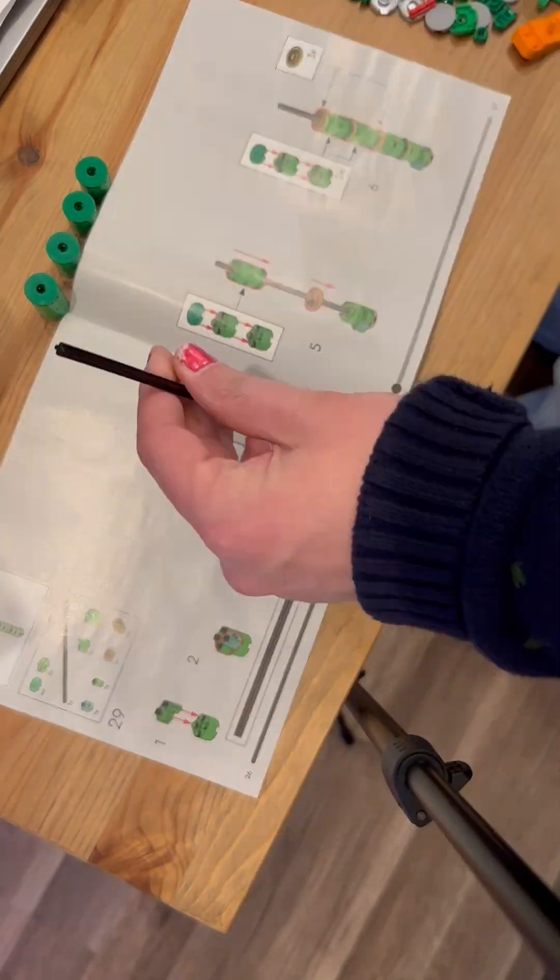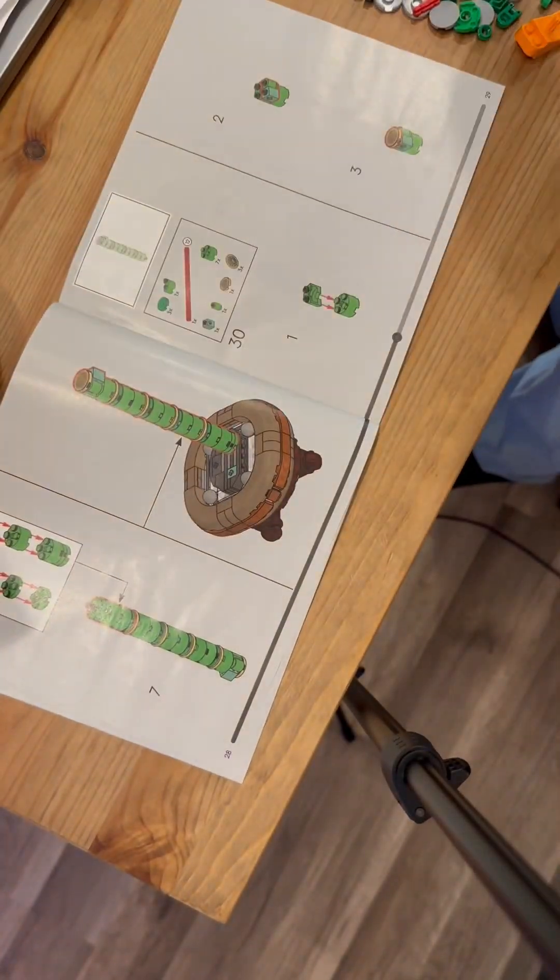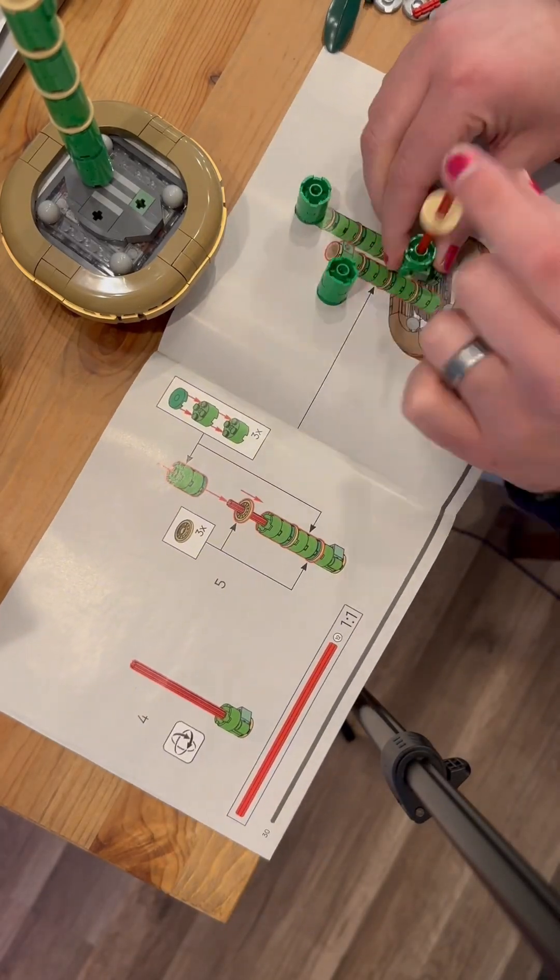When building sets like the new Lucky Bamboo set, we will often find Technic parts inside, and this is to help with the stability of the set.